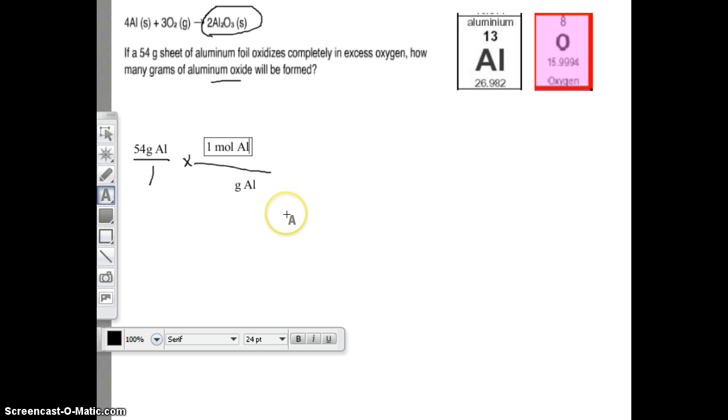Specifically, we want moles of aluminum. How many grams of aluminum are there in one mole of aluminum? If we look at our periodic table, it is 26.98. Let's go to hundredths, that makes our answers more accurate. We got rid of grams of aluminum.